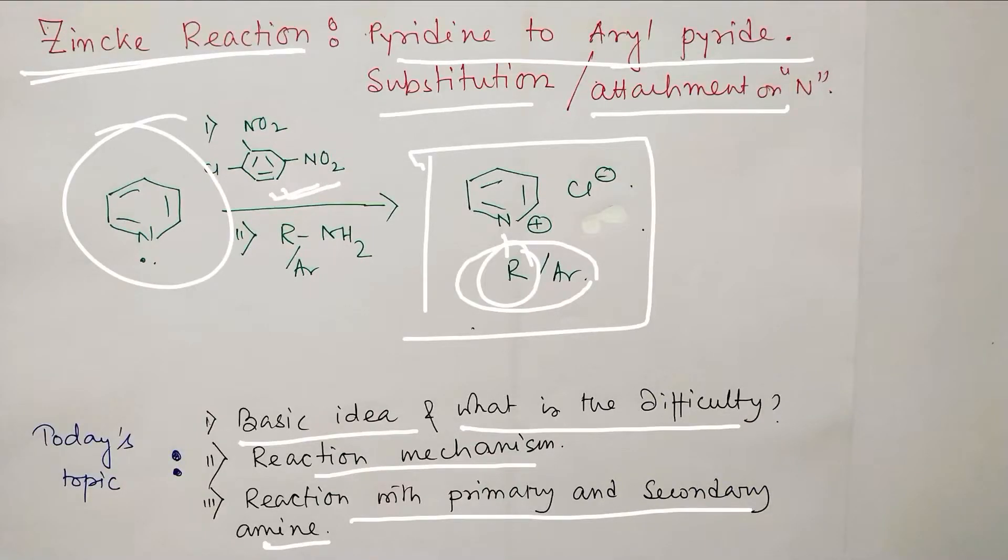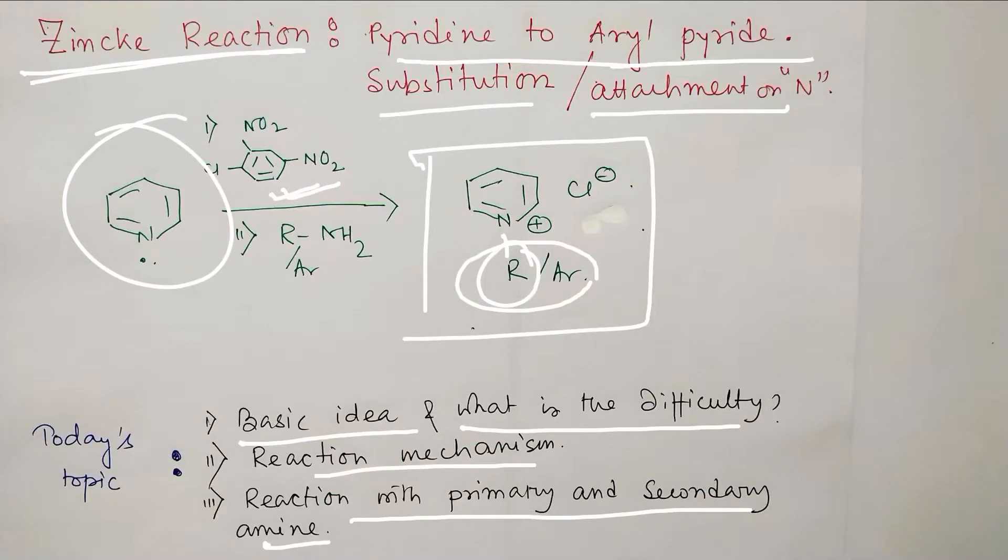Then 1-chloro-2,4-dinitrobenzene. If you look at the molecule, this 1-chloro-2,4-dinitrobenzene is very electron deficient. Why? Because with respect to chloro, these two nitro groups are in two and four position, means ortho-para position. So that makes this benzene nucleus prone to aromatic nucleophilic attack at that position where chlorine is attached.